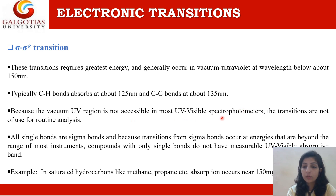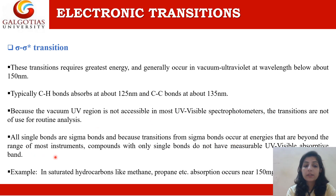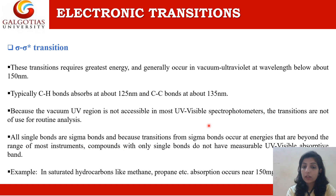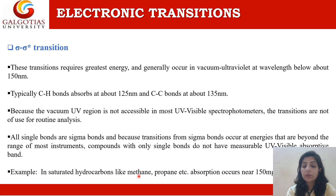Because the vacuum UV region is not accessible in most UV-visible spectrophotometers, sigma to sigma star transitions are not useful for routine analysis. All single bond compounds have transitions that are beyond the range of most instruments, so compounds with only single bonds do not have measurable UV-visible absorption bands. Examples of sigma to sigma star transitions include saturated hydrocarbons like methane and propane, absorbing near 150 millimicrons.